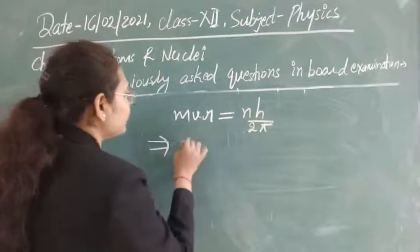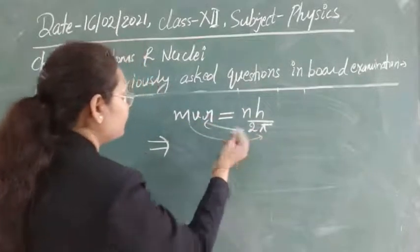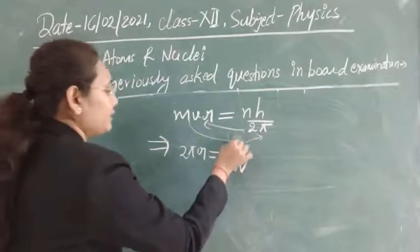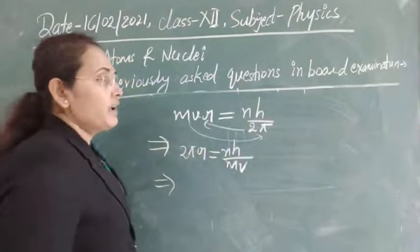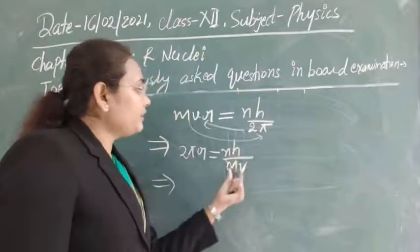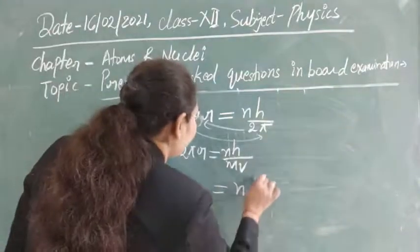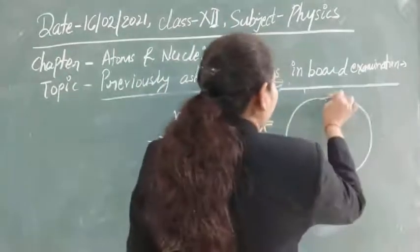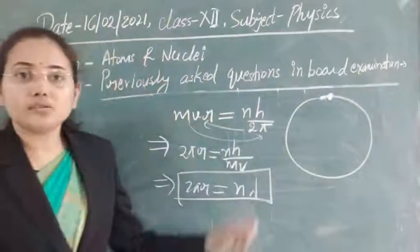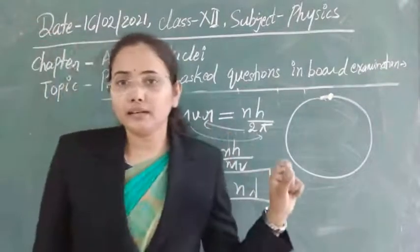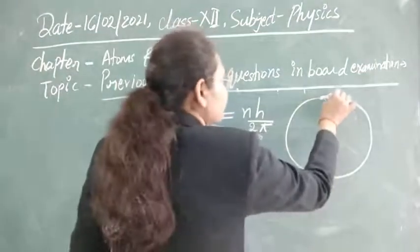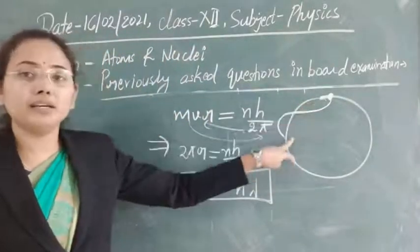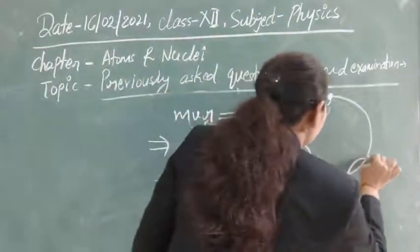To prove the de Broglie hypothesis, rearrange the equation: multiply both sides by 2π and rearrange to get 2πr = n·(h/mv). Here, h/mv is the de Broglie wavelength λ, so this becomes 2πr = nλ. This means the circumference of the orbit equals n wavelengths — the de Broglie wave condition.